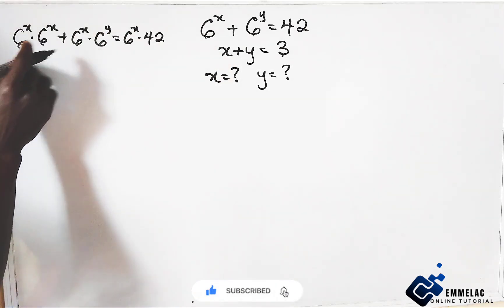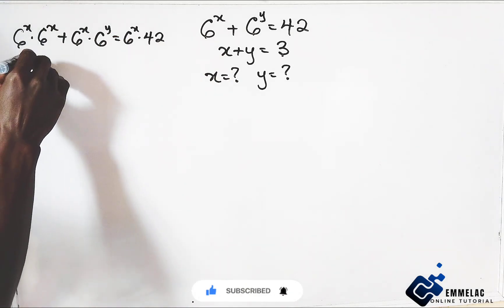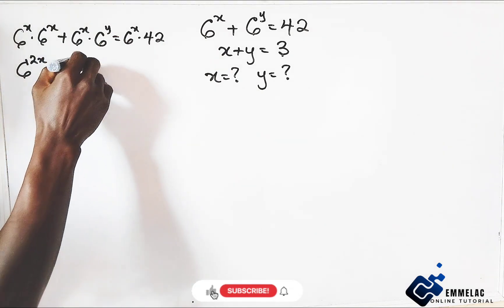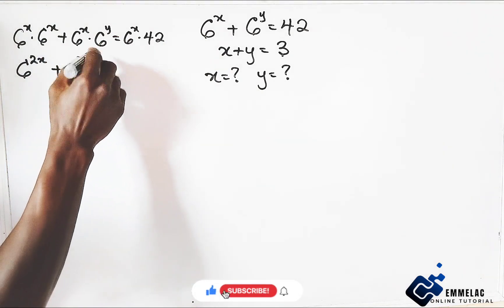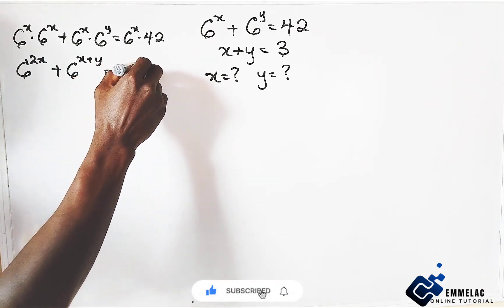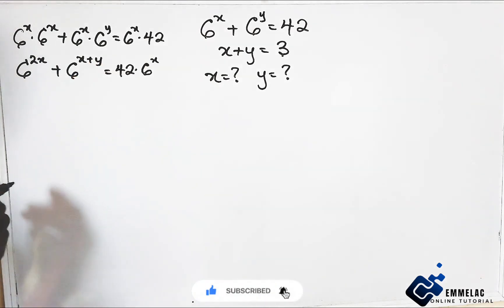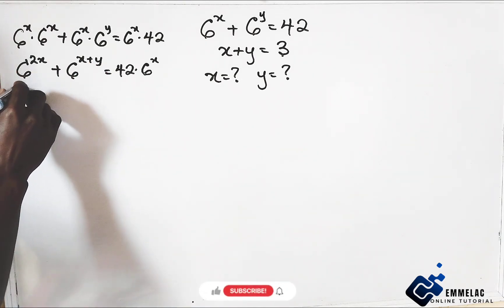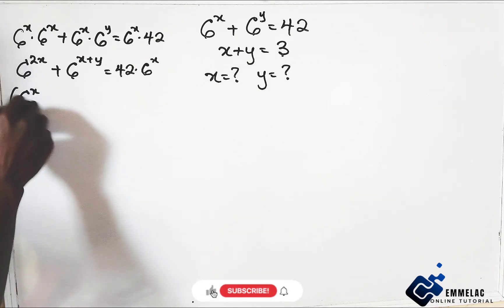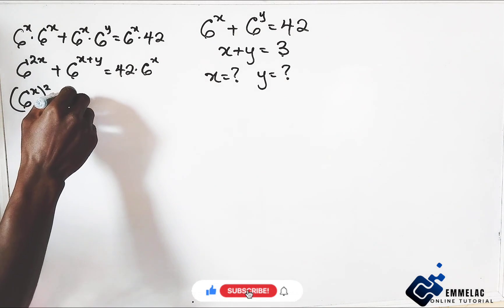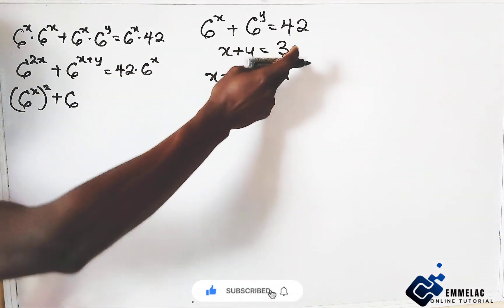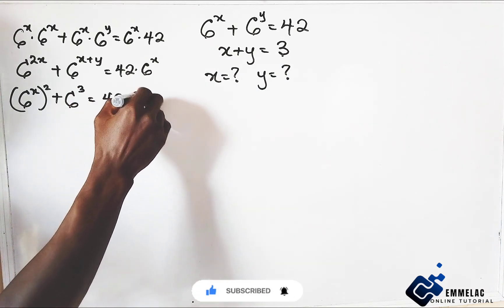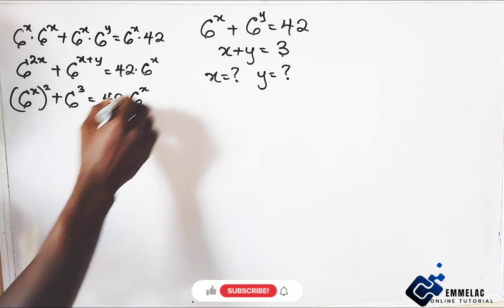Now by the law of indices, we have 6 to the power of 2x, plus 6 to the power of x plus y, equals 42 times 6 to the power of x. Rearranging and using the law of indices again, we have 6 to the power of x plus 2, and 6 to the power of 3, giving us 42 times 6 to the power of x.